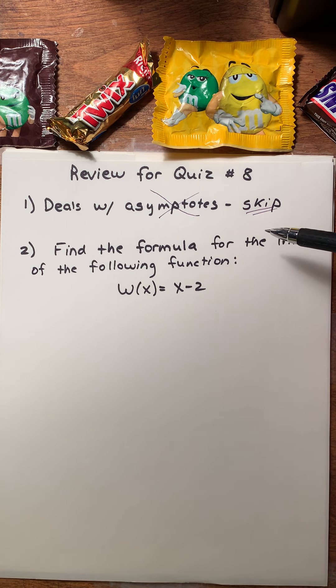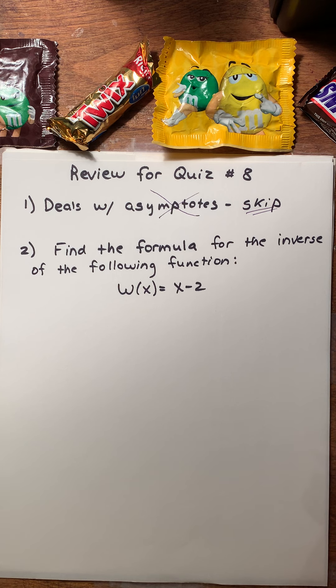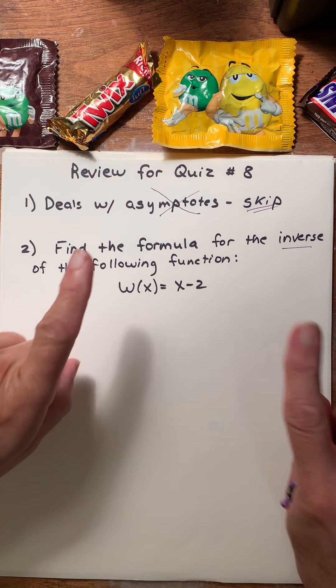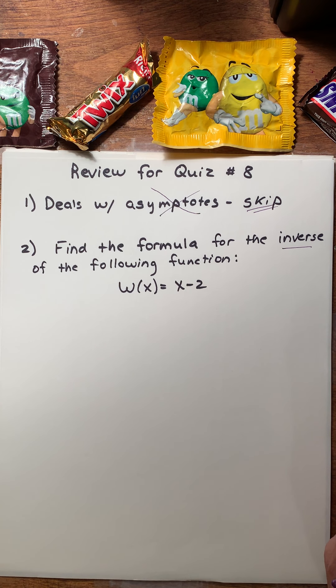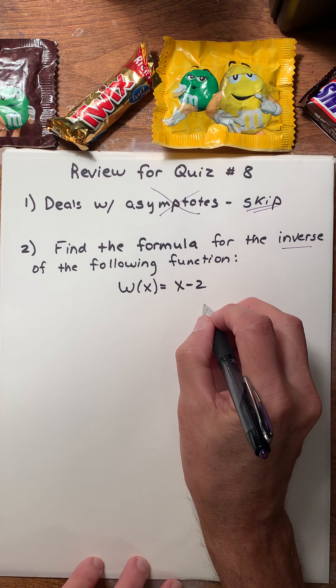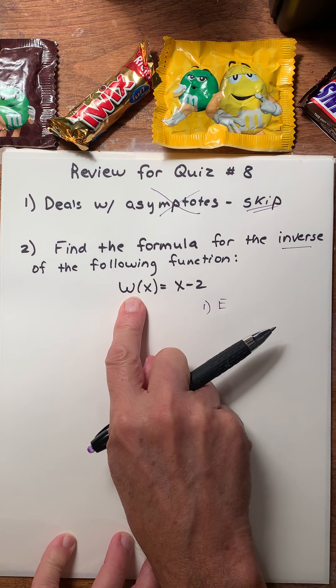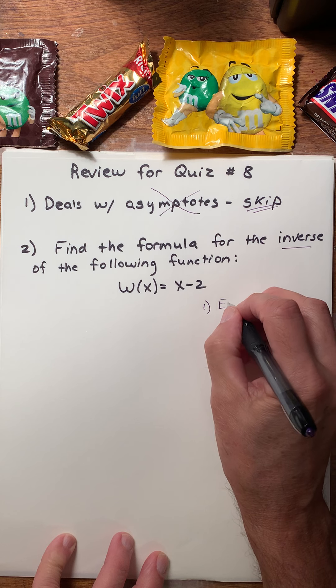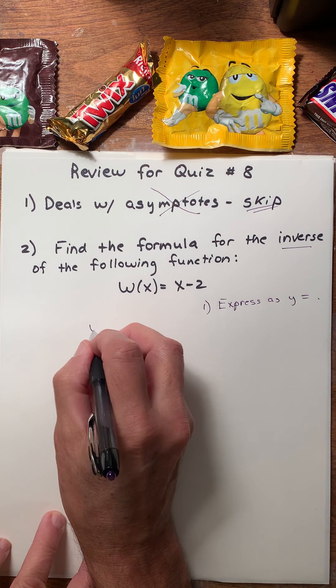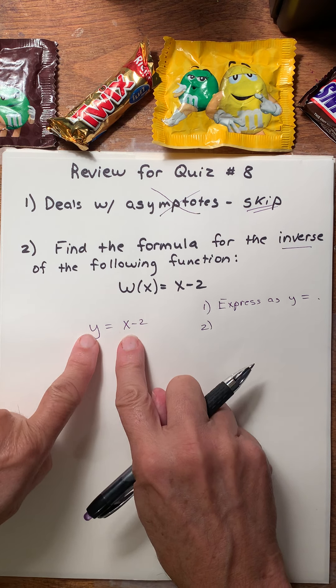Number two, find the formula for the inverse of the following function. I'm given a function here, w(x) is x minus 2. You may recall that the inverse of a function simply reverses your x and your y. For every x, y ordered pair, there is a new ordered pair that you could call yx. So we're going to use that concept to find the inverse of a particular function. It's got some steps. Step number one, I'm not going to be able to interchange the x and the y unless I see a y. So in the place of w(x), I'm going to put y.